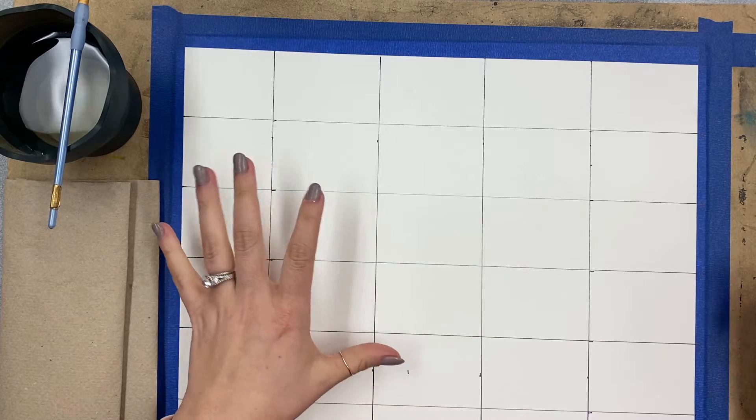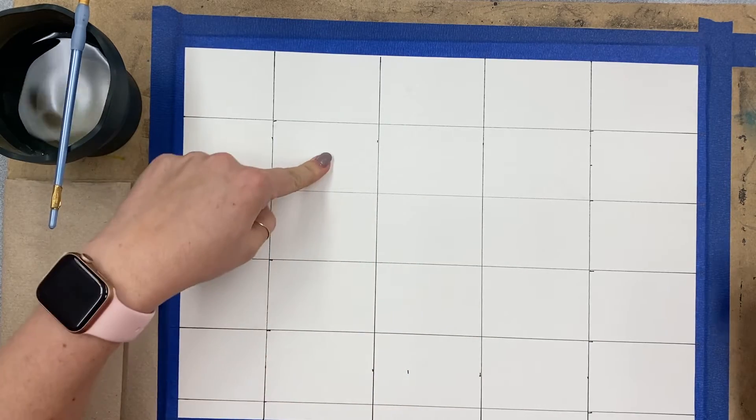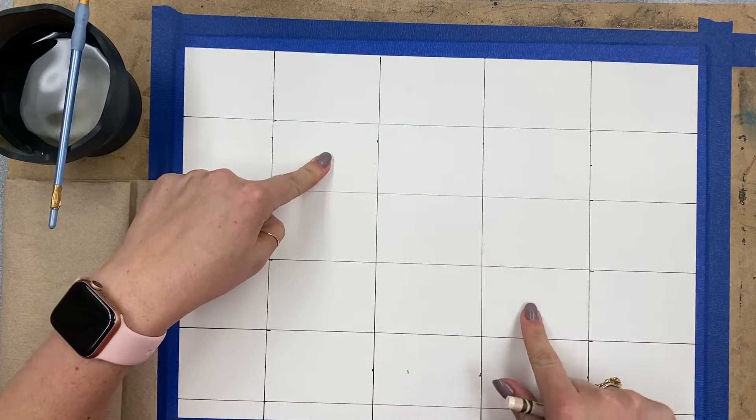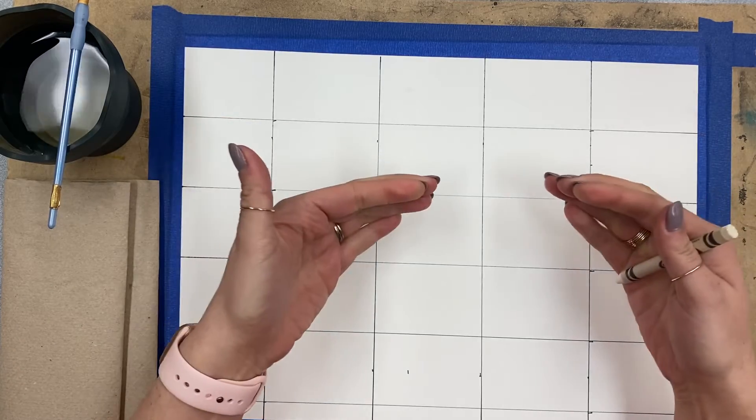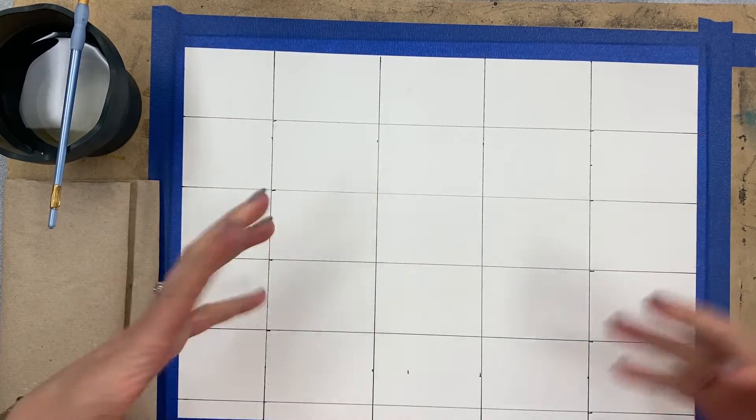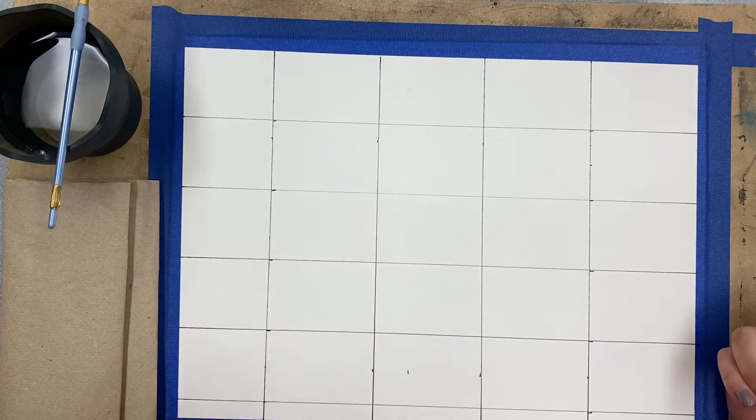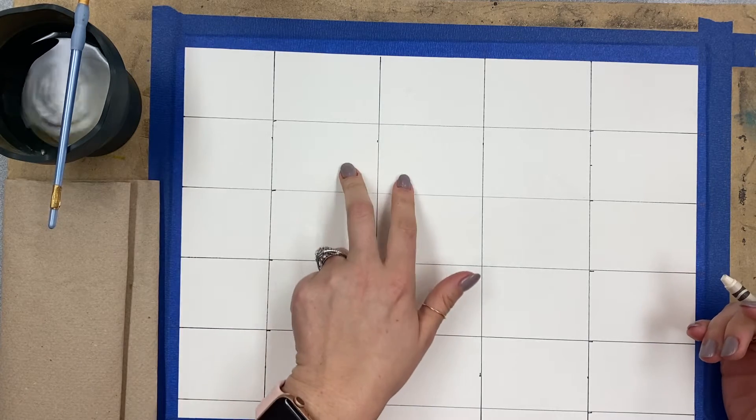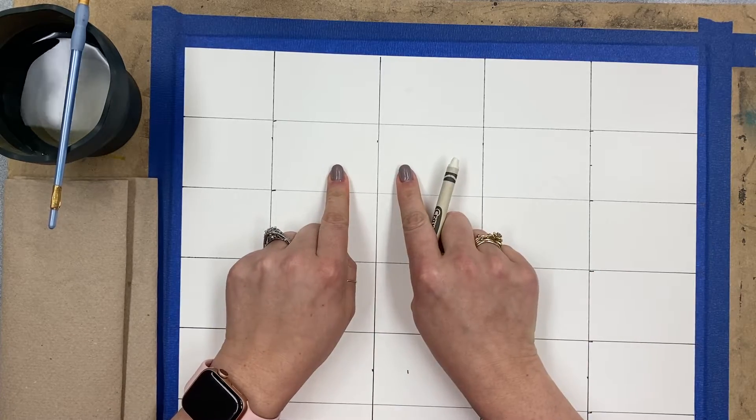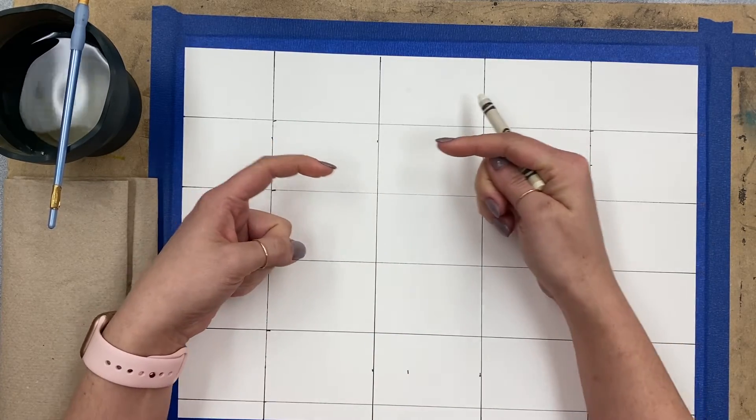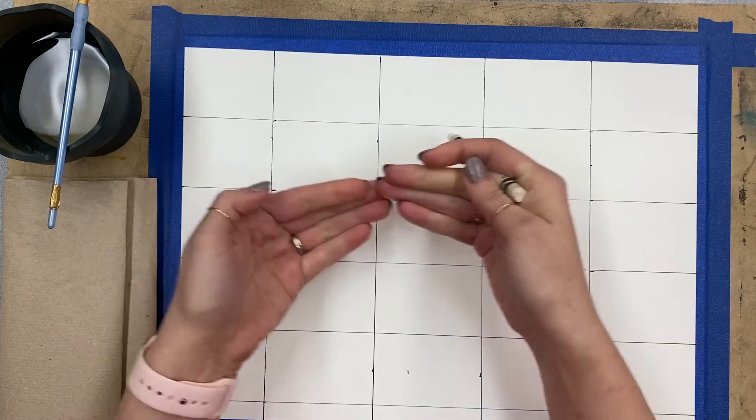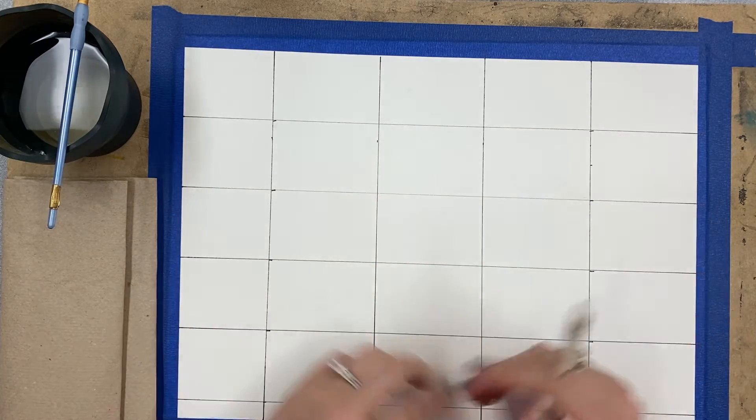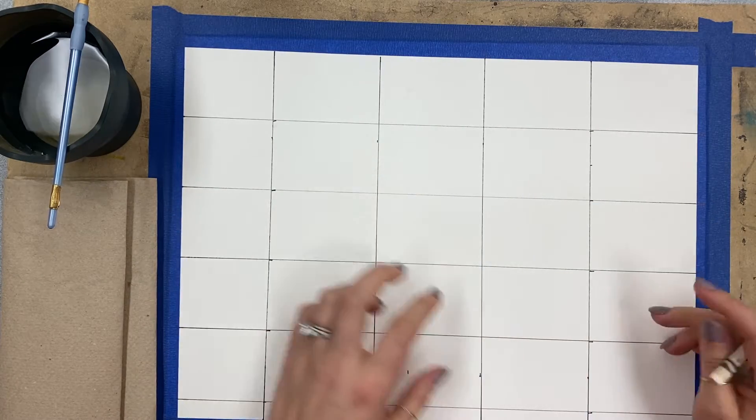We're only going to do a couple of techniques today, so maybe do this square, this square, this square, and that square so they don't bleed into each other. A lot of working with watercolor is letting it dry, and it dries fast. But if I do both these squares next to each other with blue here and yellow here, as soon as the water molecules touch, the pigment rushes between those two areas. You want to keep everything separated.